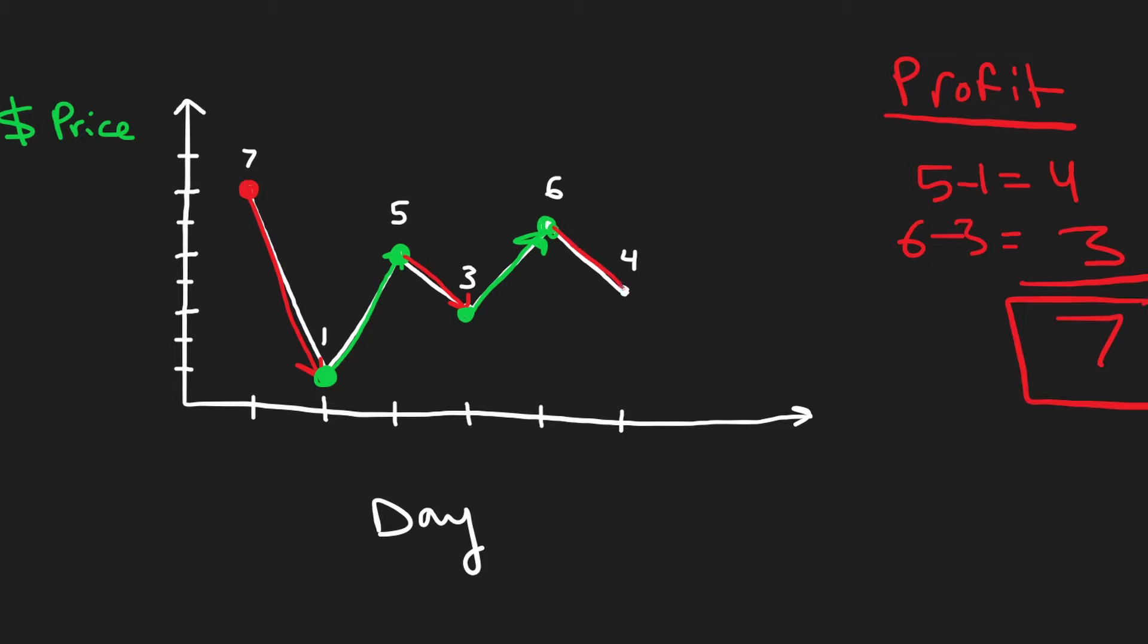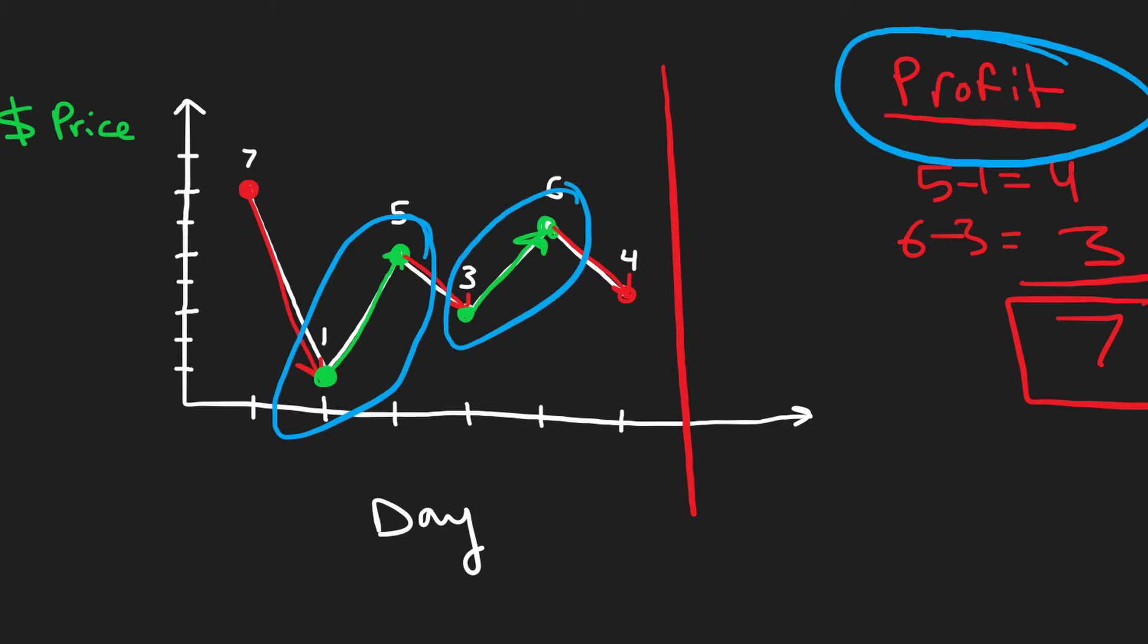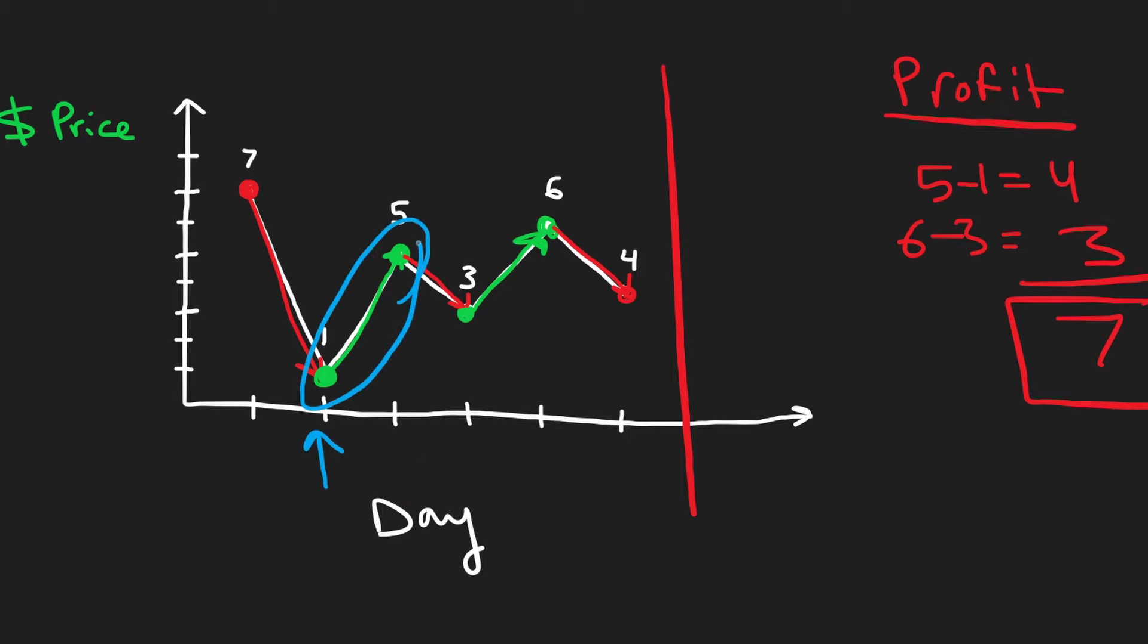And now we know that the stock is about to go down to this value. But as you can see, what we're going to be doing is we're going to be adding every increase of the stock price to our total profit. So every time the array values are in increasing order, we're going to be adding those differentials between those increasing prices to our total profit.